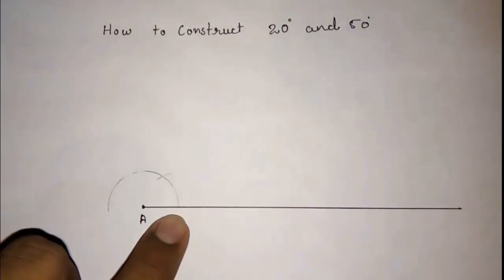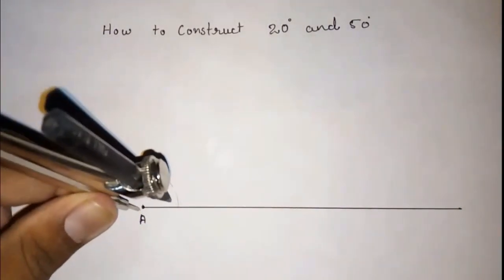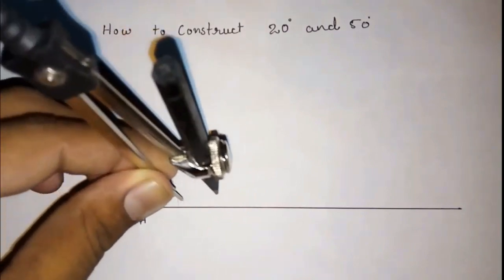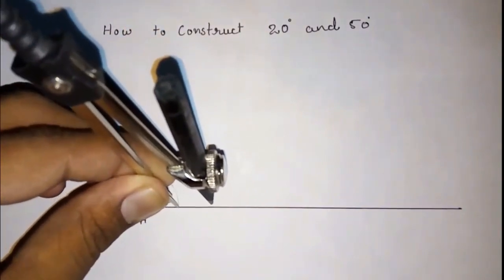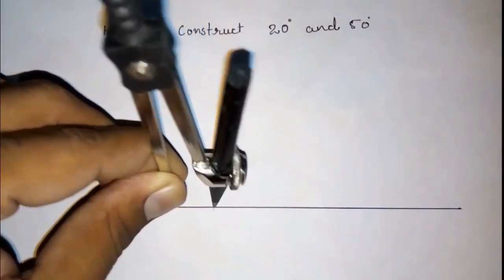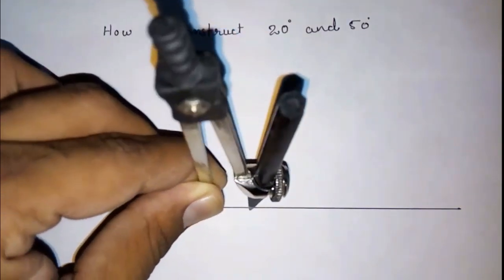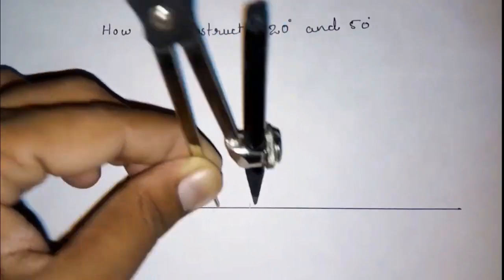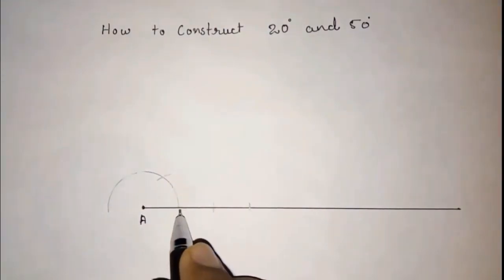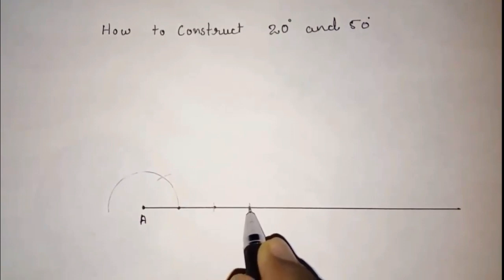We have to take this distance three times. From A to this point, again from A to this, one more arc. Again from this, one more arc. I am labeling so you know. Look here: Point B, Point C, Point D.